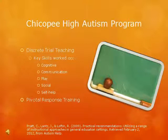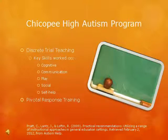Another approach used at the Chicopee Autism program is pivotal response training, which is used alongside discrete trial teaching. Pivotal response training emphasizes key pivotal skills, asserting that students who learn pivotal skills will generalize them into other areas.